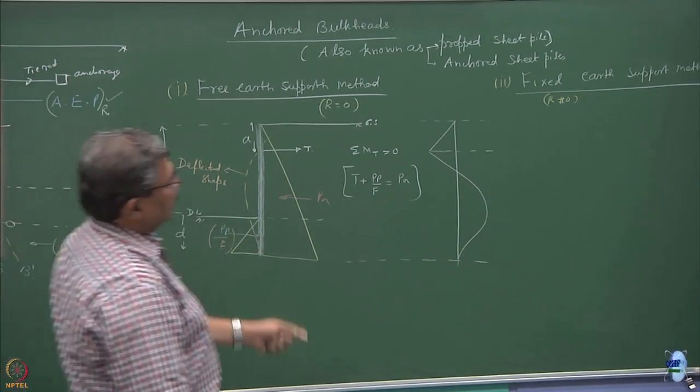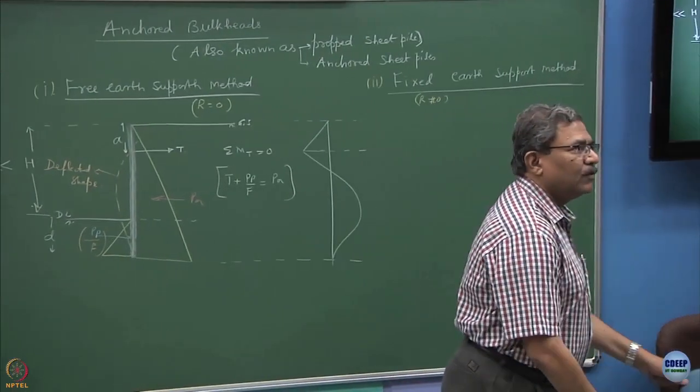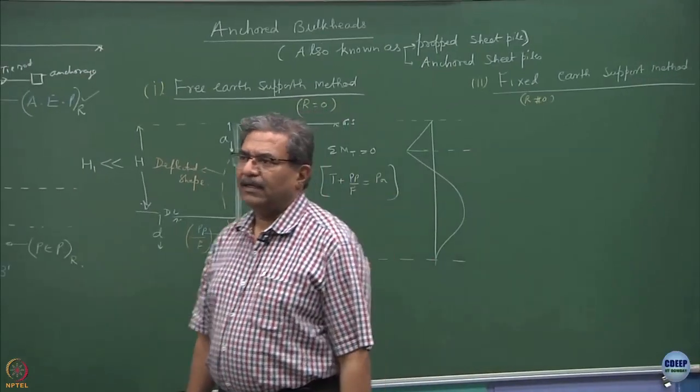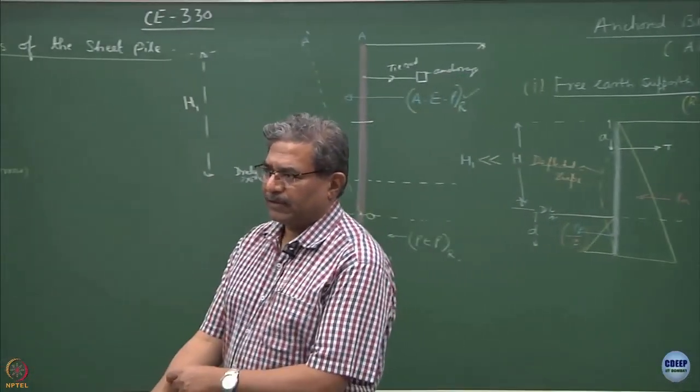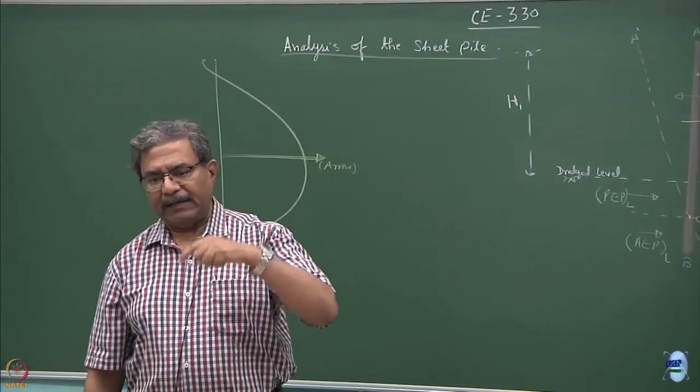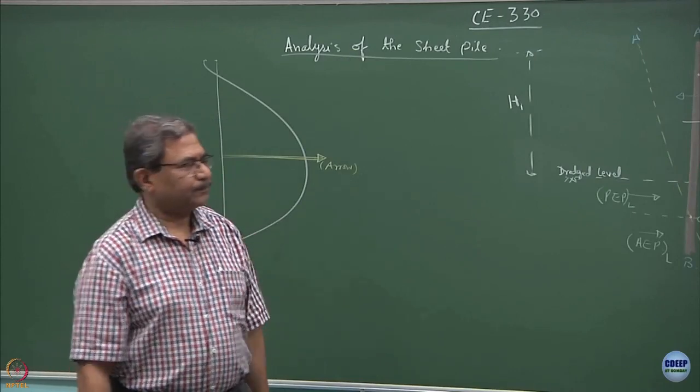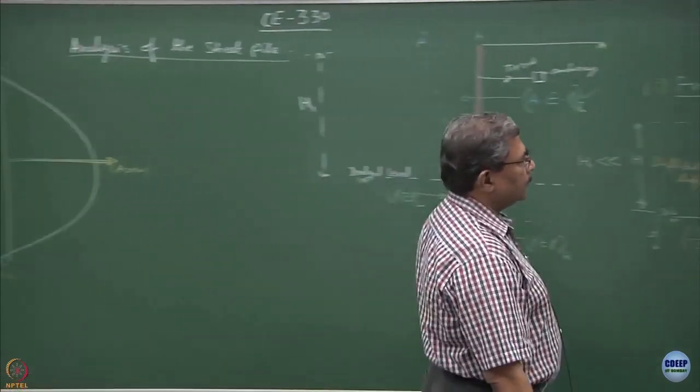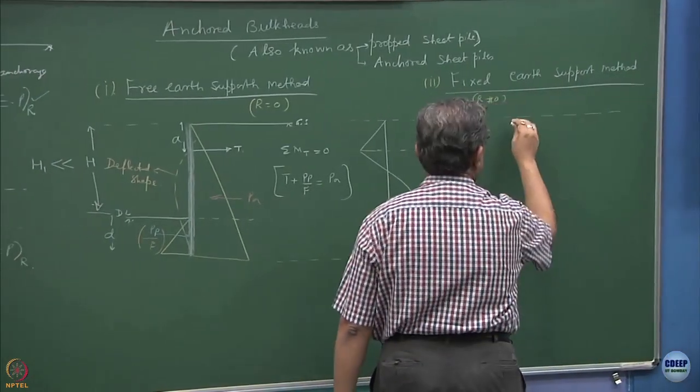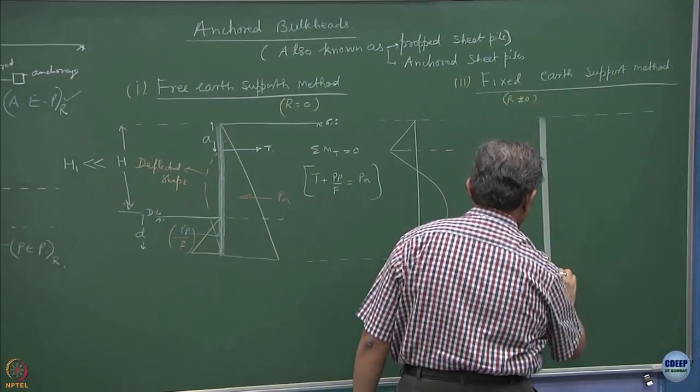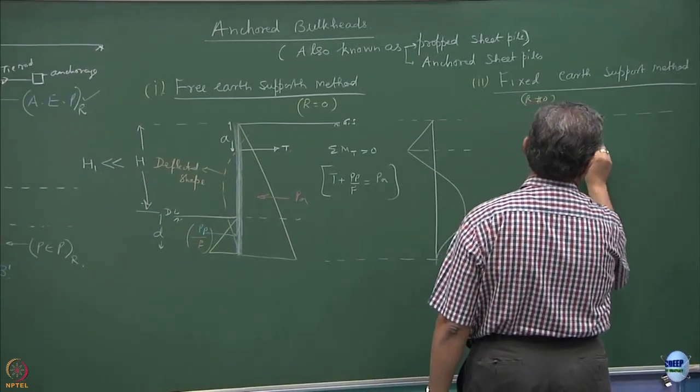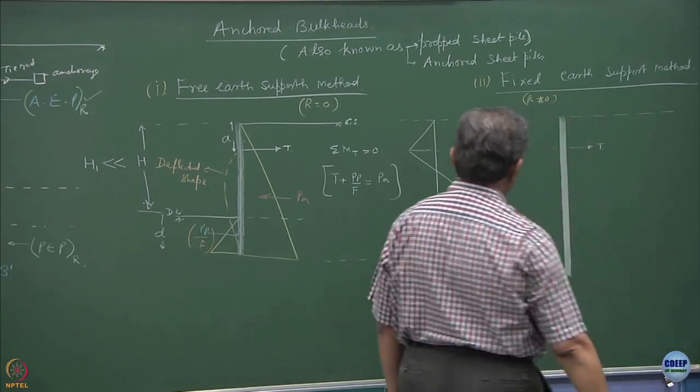Now, if you have followed this, the fixed earth support method becomes very easy to follow. What we do is in free earth support method, we do not impose a factor of safety but yes, that d value will be incremented by 20%. In this case, this is the propping which has been done.